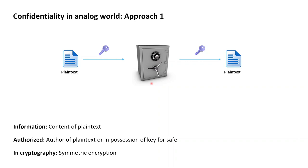While this approach perfectly well implements confidentiality in the analog world, it has the downside that if Alice wants to send a plaintext confidentially to Bob, then both Alice and Bob would need to have agreed on a specific safe beforehand and would need to have exchanged the corresponding keys before they could exchange the plaintext confidentially. Taking this further, if we have a group of 10 participants where each pair wants to confidentially exchange plaintext, each pair would need a dedicated safe and would need to have exchanged the corresponding keys beforehand.